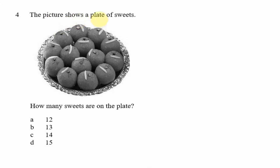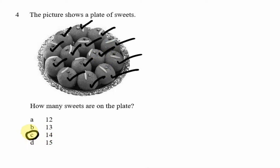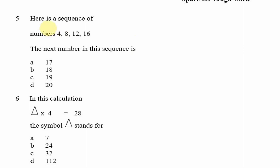Question 4: The picture shows a plate of sweets. How many sweets are on the plate? The best thing to do is mark as you count: one, two, three, four, five, six, seven, eight, nine, ten, eleven, twelve, thirteen, fourteen. So our answer is 14 sweets.